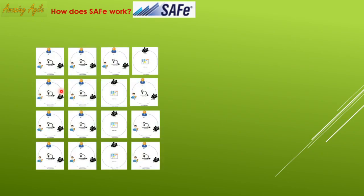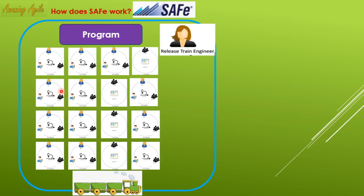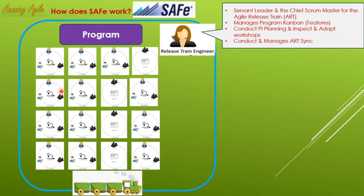Now assume your company has 15 or 12 projects going on. How will it work? You cannot just run them loosely together. There are a few additional roles to be added that will make the total activity run smoothly at the program level. One key role is the Release Train Engineer, or RTE — basically the chief Scrum Master. The RTE is a servant leader and chief Scrum Master for the Agile Release Train.